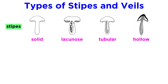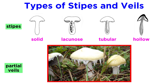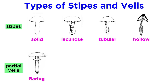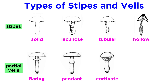The stipe of a mushroom can be solid or hollow. Stipes may have a partial veil with a variety of textures from slimy to thread-like. Flaring veils attach and flare upwards. Pendant veils flare or hang downwards. Cortinate veils form a web-like mesh that covers the gills. Sometimes there may only be a ring zone that shows the remnants of a veil, and often mushrooms show no signs of a partial veil.